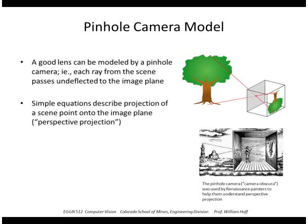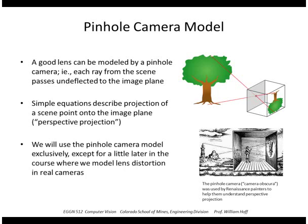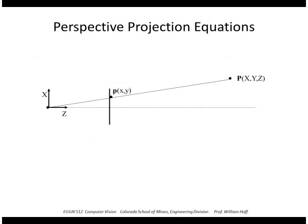So the advantage of this is that there are very simple equations to describe the projection of a scene point onto the image. And this is what we call perspective projection. We're going to use this pinhole camera model exclusively, except a little later in the course where we're going to model actual lens distortion and real cameras.